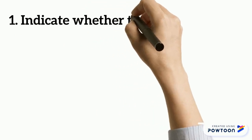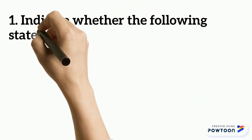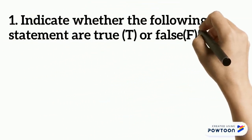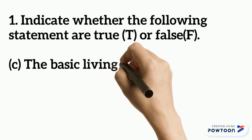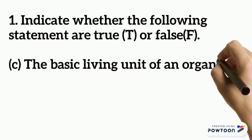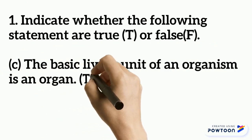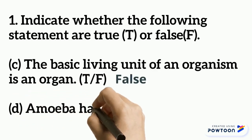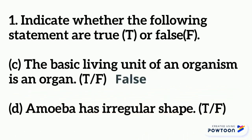Part c says the basic living unit of an organism is an organ. This is false, because the basic living unit is the cell. Part d says amoeba has an irregular shape. Yes, it is true that it has a regular shape.